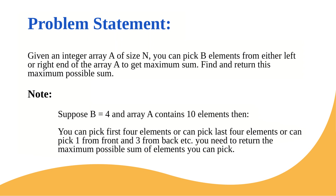The problem statement is: given an integer array A of size N, you need to pick B elements from either the left or right end of the array A to get the maximum sum. We need to return this maximum possible sum. We can pick from the leftmost end or the rightmost end of the array, and we need to pick them without skipping any element from that end.